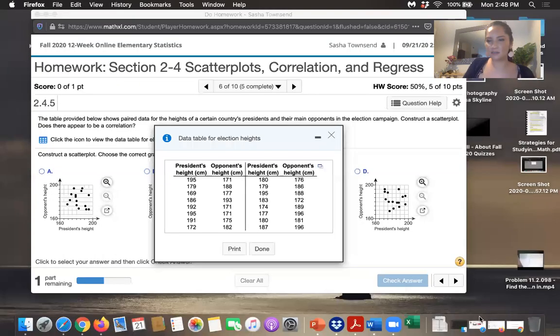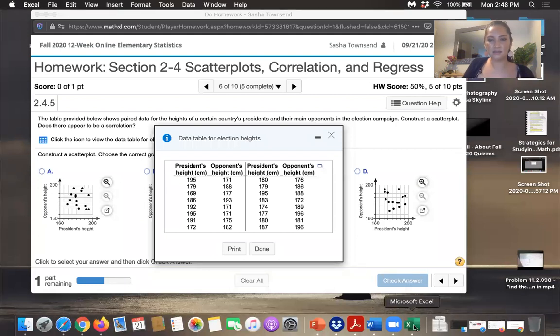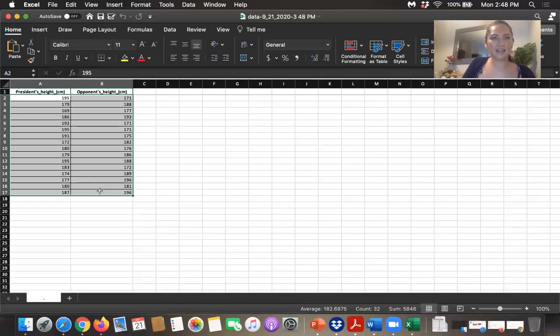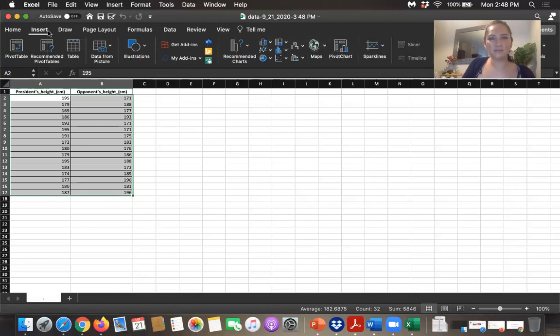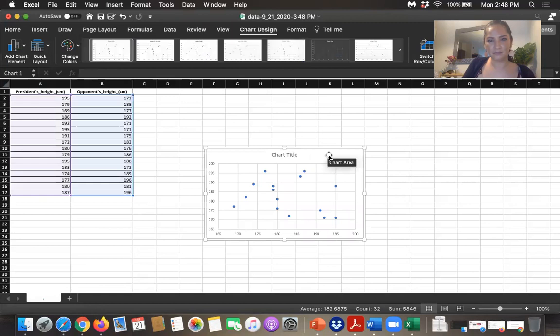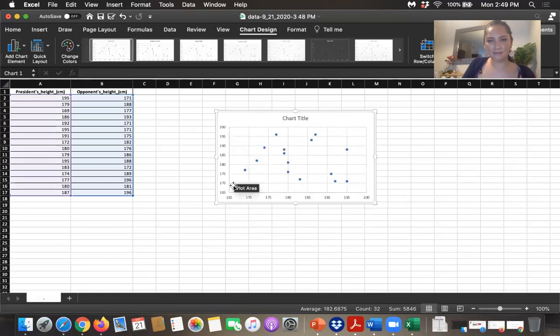And then let's open Excel. There it is. We've got the data for that homework problem. So you just want to highlight all of that data and then go to insert. And on my ribbon, I have this picture of a scatter plot. So I just choose the first one that says scatter and I've got exactly what I wanted right here.